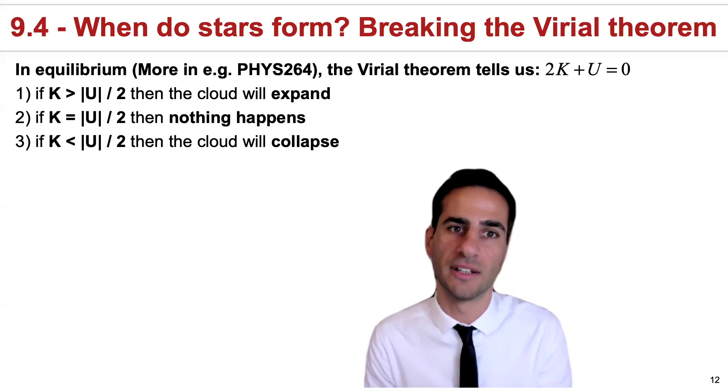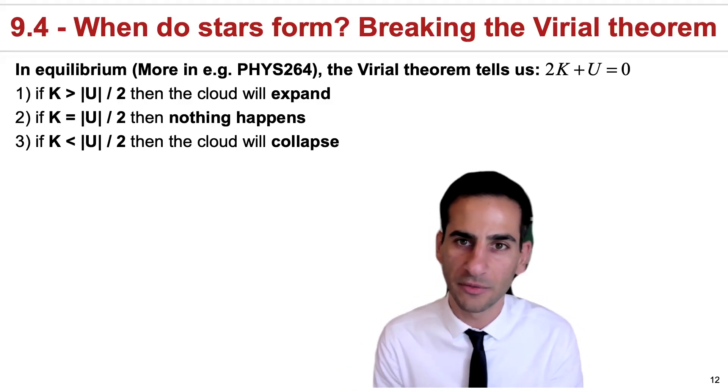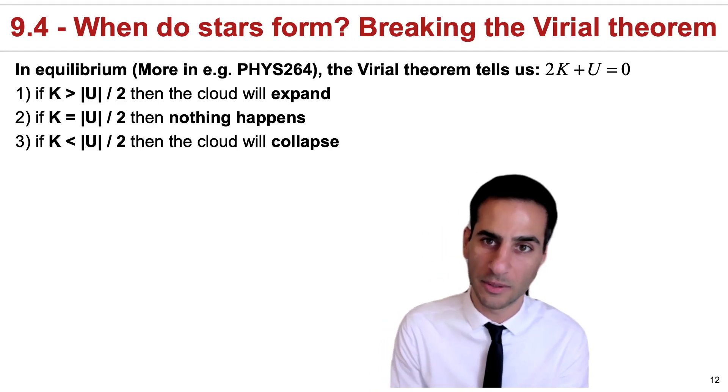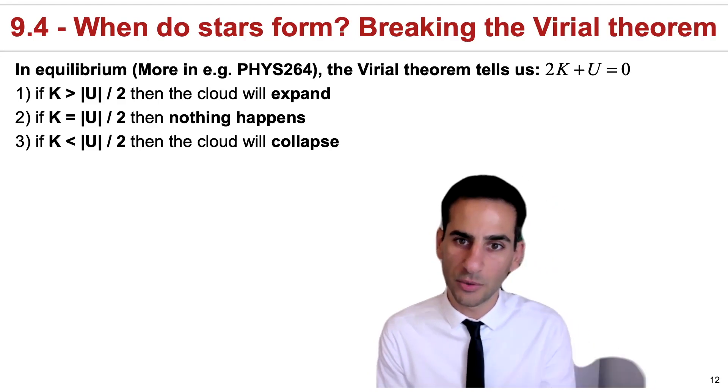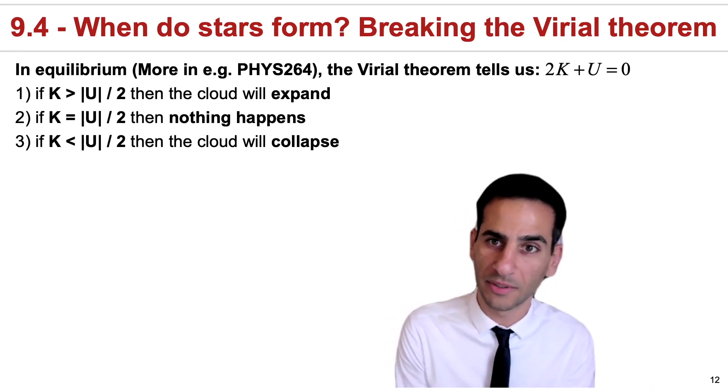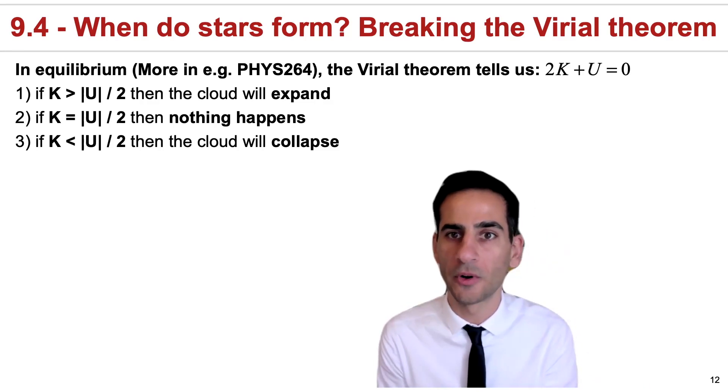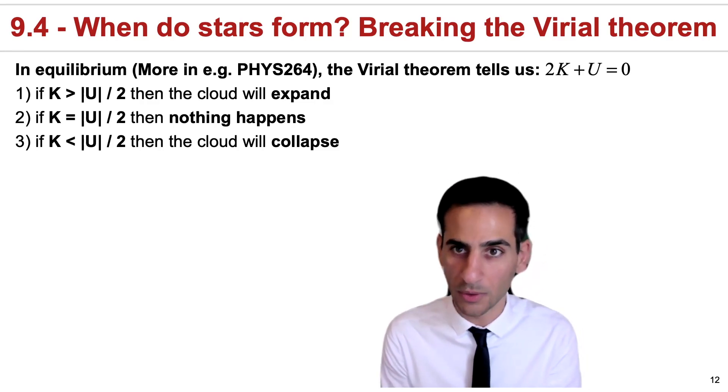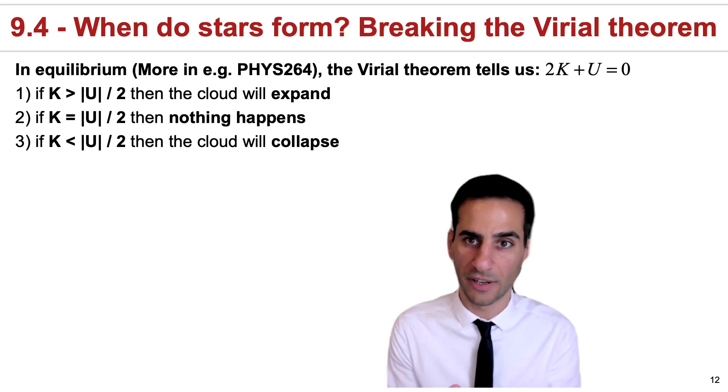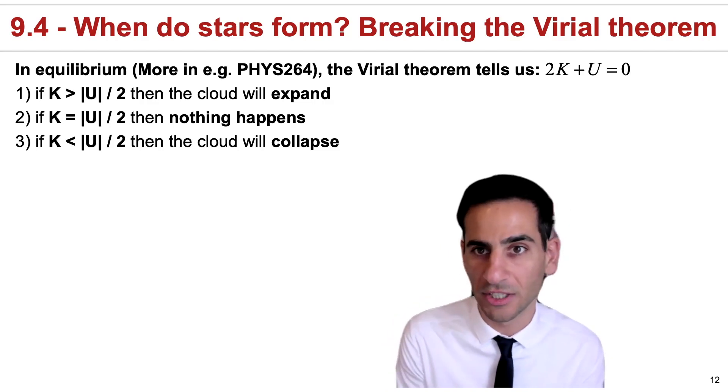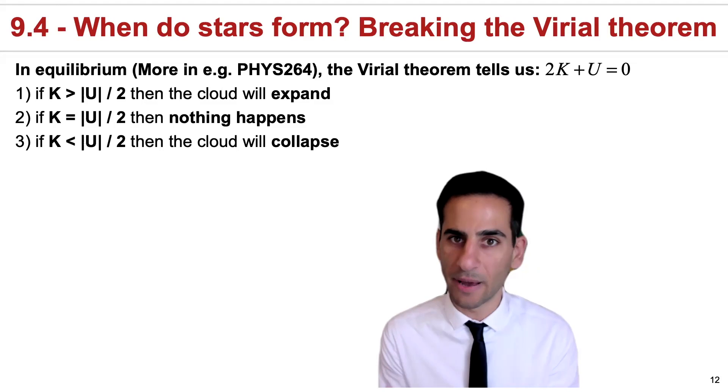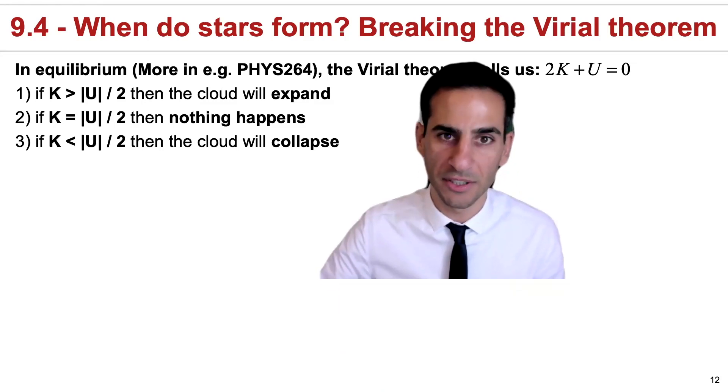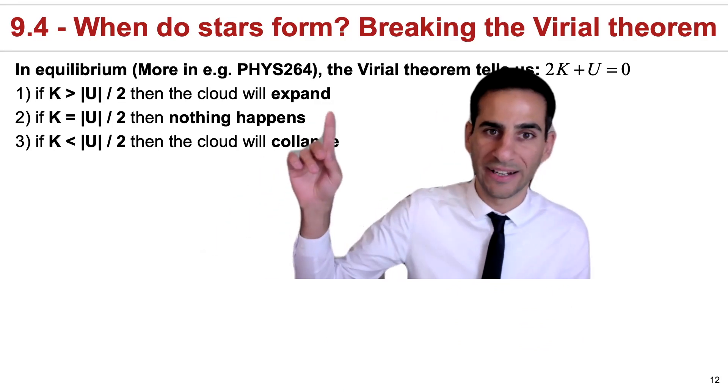You'll be covering this in more detail in Physics 264, but the Virial theorem essentially tells us that if a cloud is in equilibrium, then 2K + U = 0, or in other words, the kinetic energy will equal, at least in magnitude or in value, the gravitational potential energy divided by two. Mathematically, this is really useful because it allows us to establish three different cases for any given cloud.